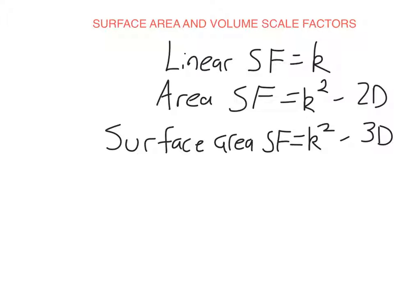Remember the reason for this is when you're finding area or surface area, you're multiplying the two dimensions together. So you're multiplying by the linear scale factor k twice. Now the volume scale factor, when you're finding volume, you're multiplying three dimensions together. So you're multiplying by this linear scale factor three times. So the linear scale factor is k cubed. Remember if you wanted to find the volume of say a rectangular prism, it's length times width times height.